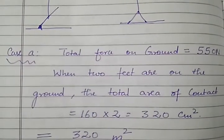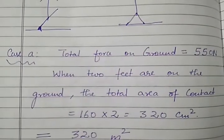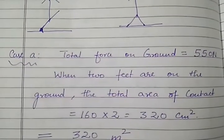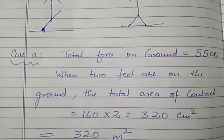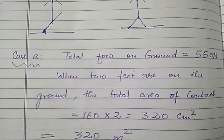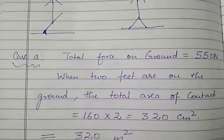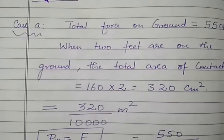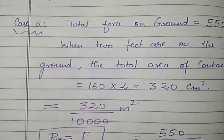Since this is in centimeters squared we need to convert it to meters squared since the force is in Newton and Newton per meter squared is the unit of pressure. So to convert 320 centimeters squared into meters squared we divide by 10,000 so 320 by 10,000 meters squared.